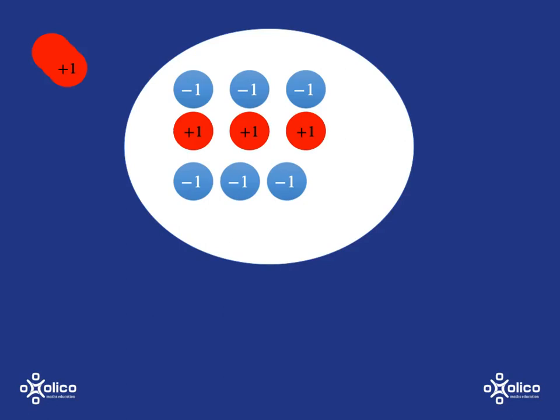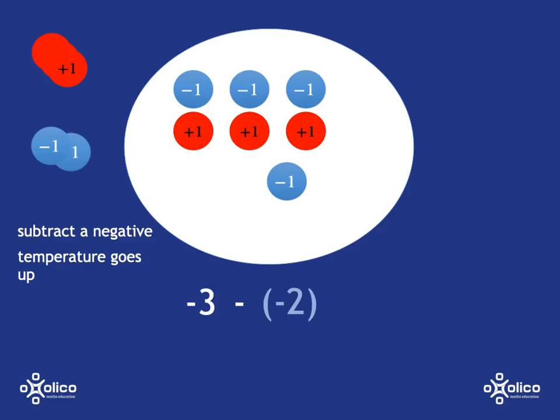How does that help us with calculations? In this pot we have three zero pairs plus three negative ones, giving a temperature of negative three. If we take away negative two, we're subtracting a negative — taking out some of the cold. Taking out cold means the temperature must go up. So taking away a negative is the same as adding, and we get an answer of negative one, which you can see in the picture.